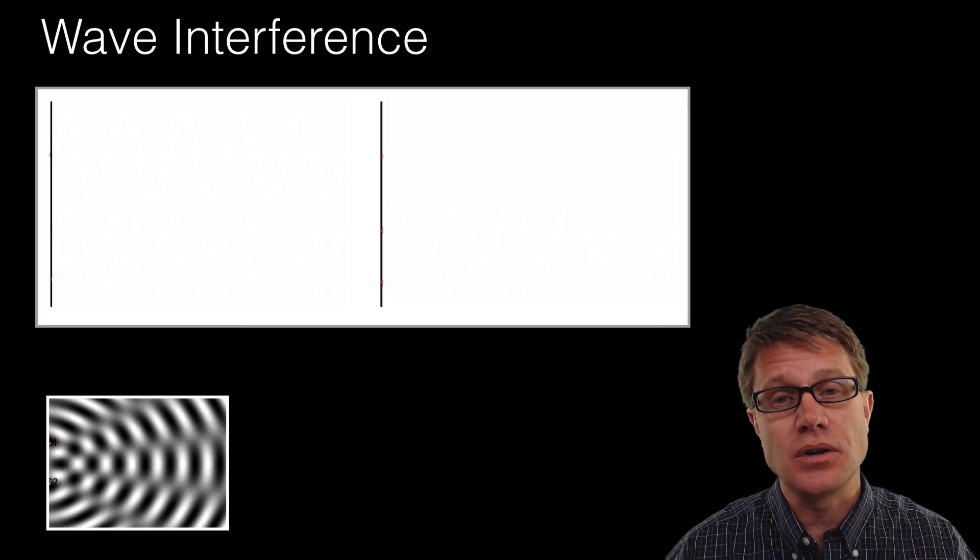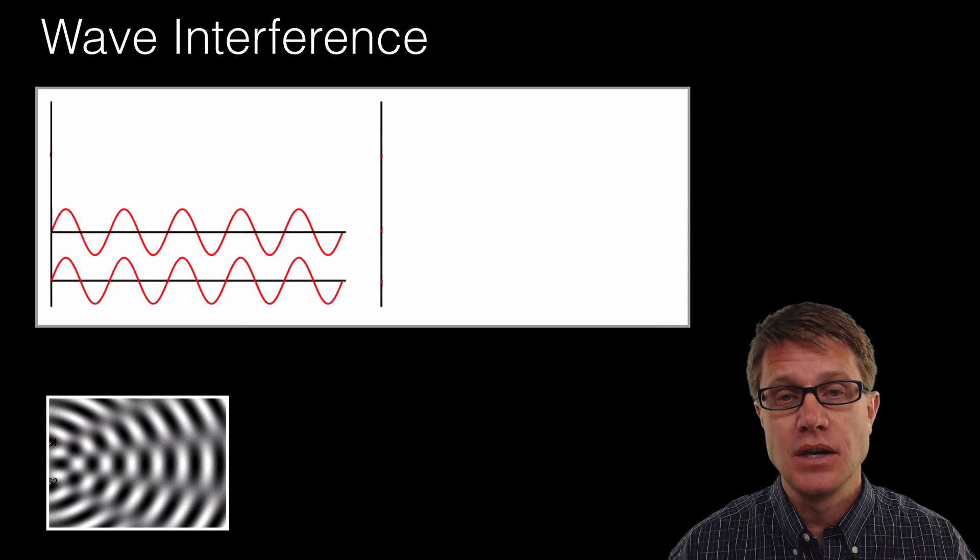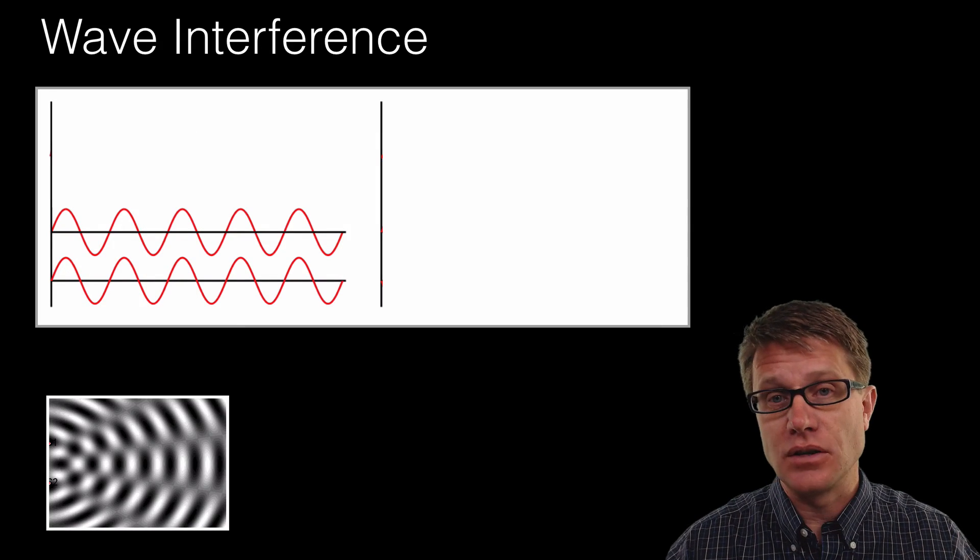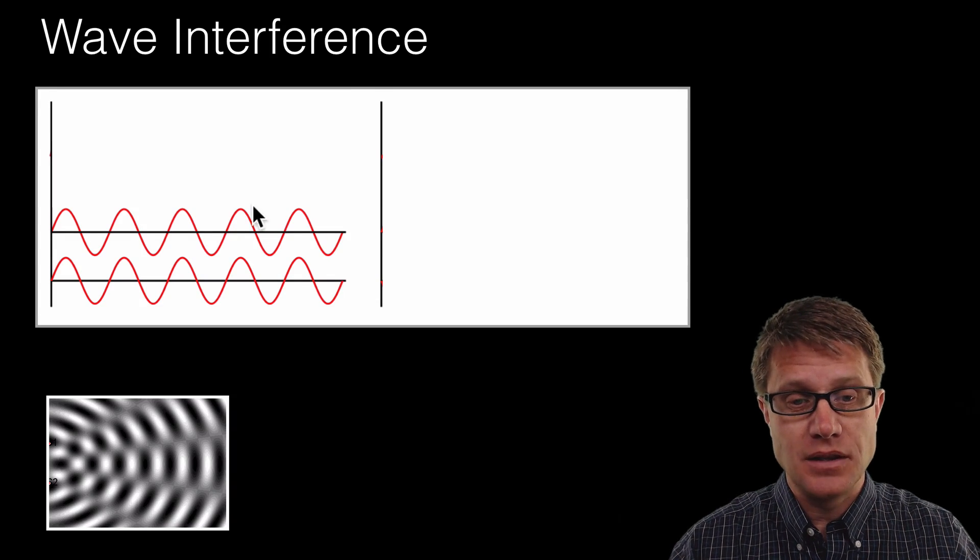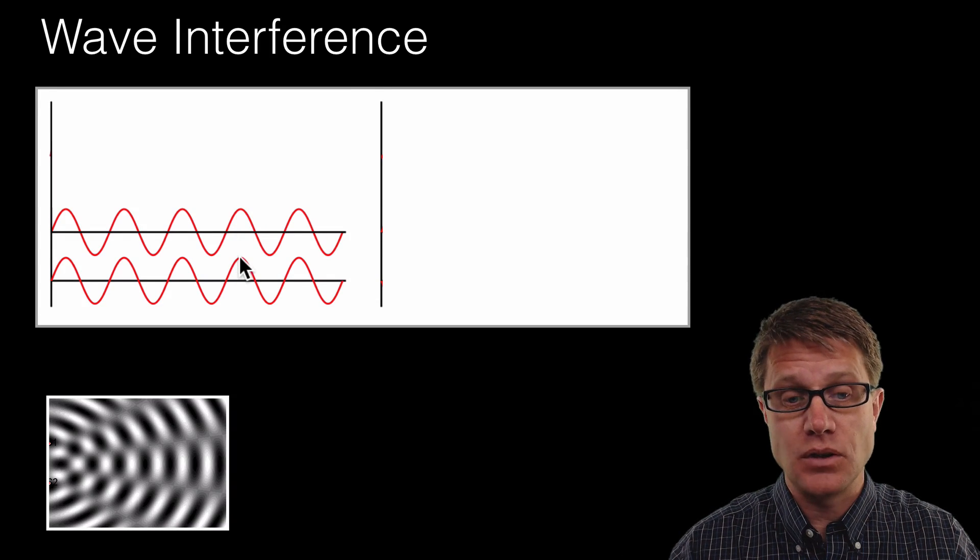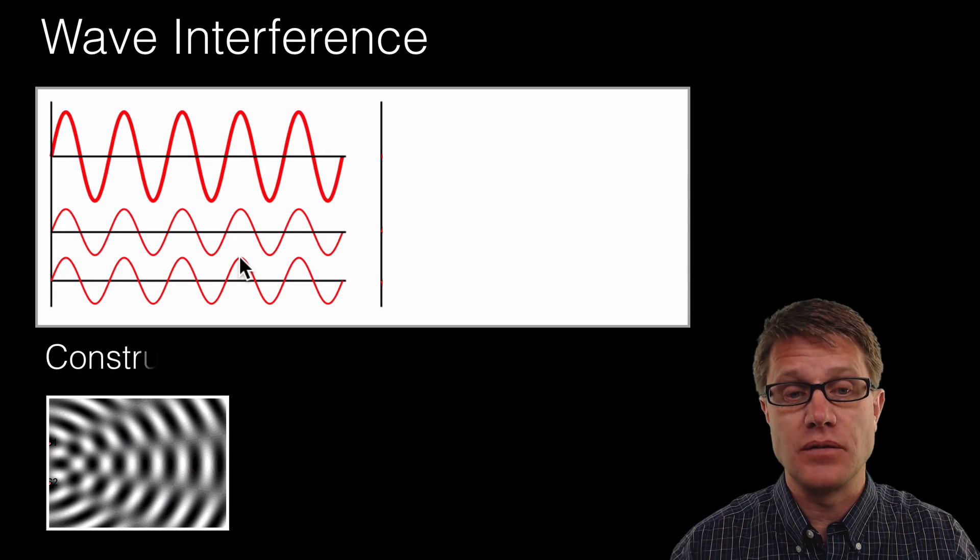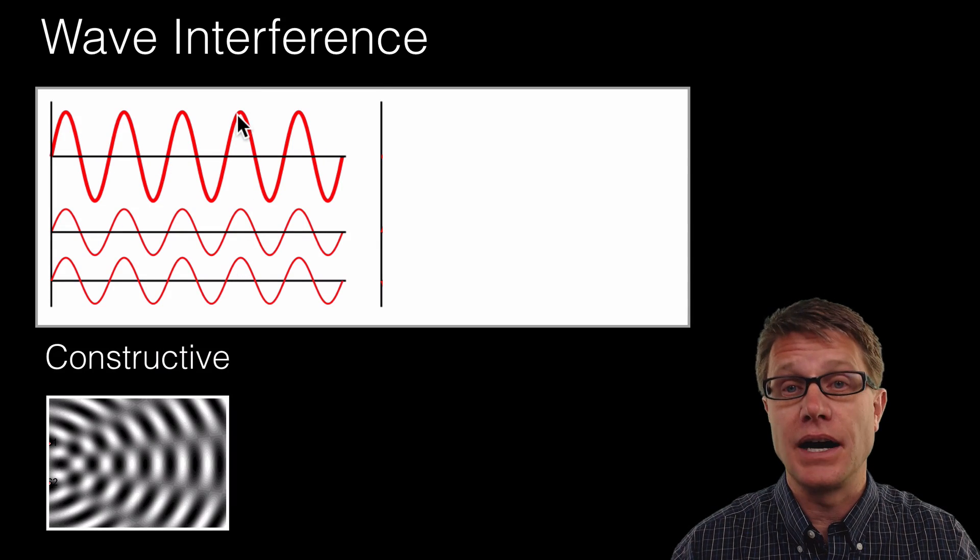And so remember wave interference occurs if we ever have two waves that are matching each other as far as their phase goes, they are in phase with each other. What will happen is this one is going up, this one is going up. And so the constructive interference will be going really high up.